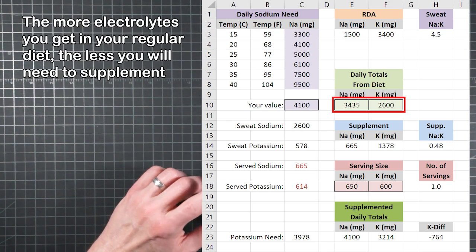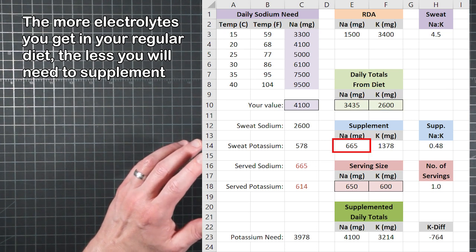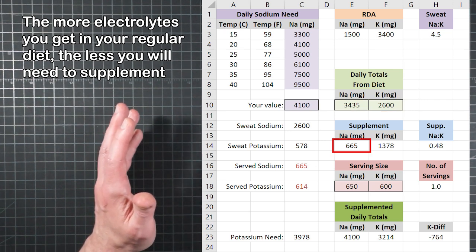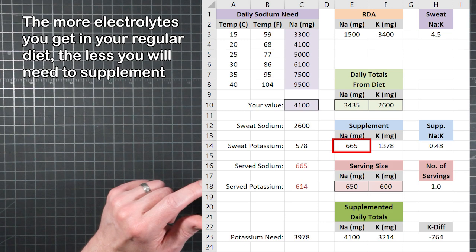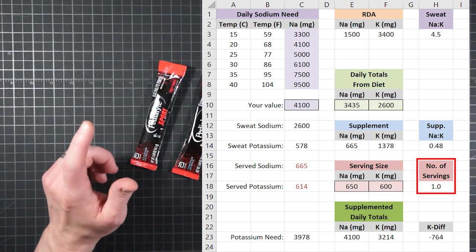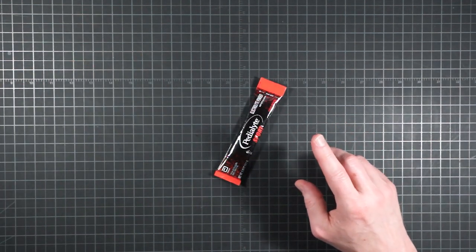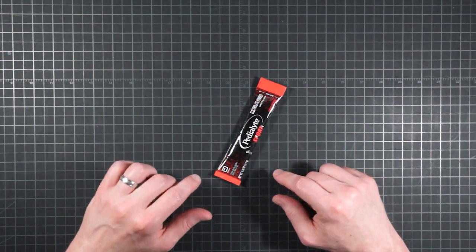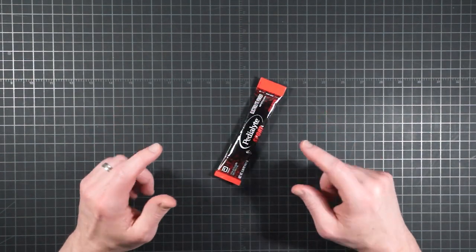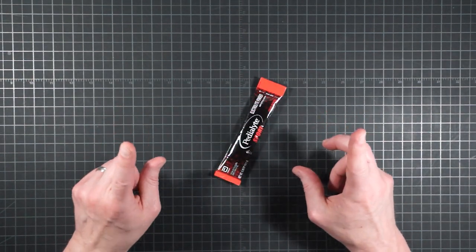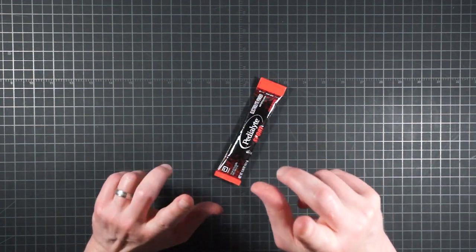So now look at what the new diet totals do to the rest of the numbers. Because I'm now getting more sodium from food, the need to supplement dropped from 2092 milligrams down to just 655. That means to satisfy the very same daily sodium need, I now only have to carry one of these per day instead of three. If you've ever wondered why backpacking meals tend towards higher sodium levels, this might help explain the appeal.